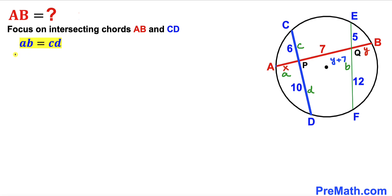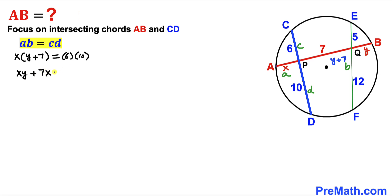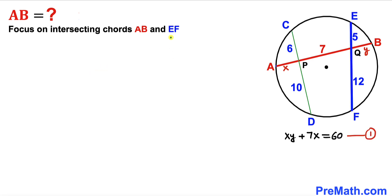Now applying this to our problem: chords AB and CD intersect at point P. Segment CP is 6, segment PD is 10, segment AP is X, and segment PB is Y plus 7. So we get X times (Y + 7) equals 6 times 10. Distributing X gives us XY + 7X equals 60. We'll label this as Equation 1.